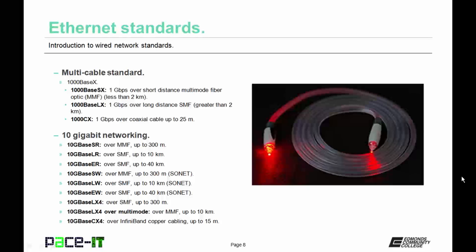Then there's 10GBaseLX4, which runs over single-mode fiber and is good for up to 300 meters. Then there's 10GBaseLX4 over multimode fiber, which is good for up to 10 kilometers. Finally, there is 10GBaseCX4, which runs over InfiniBand copper cabling and is good for up to 15 meters.